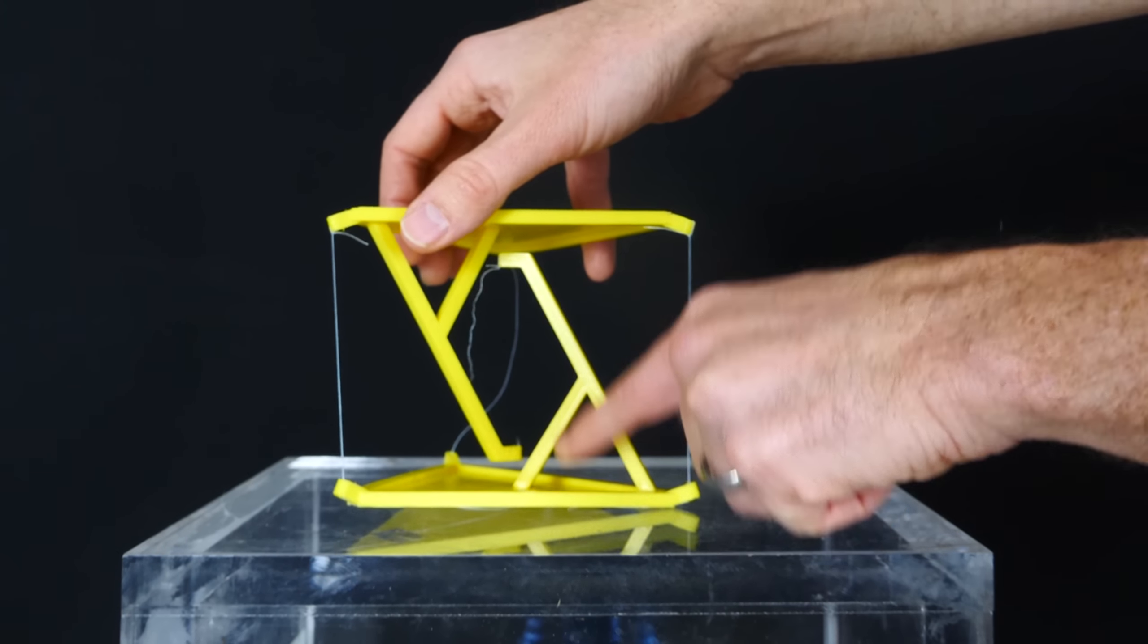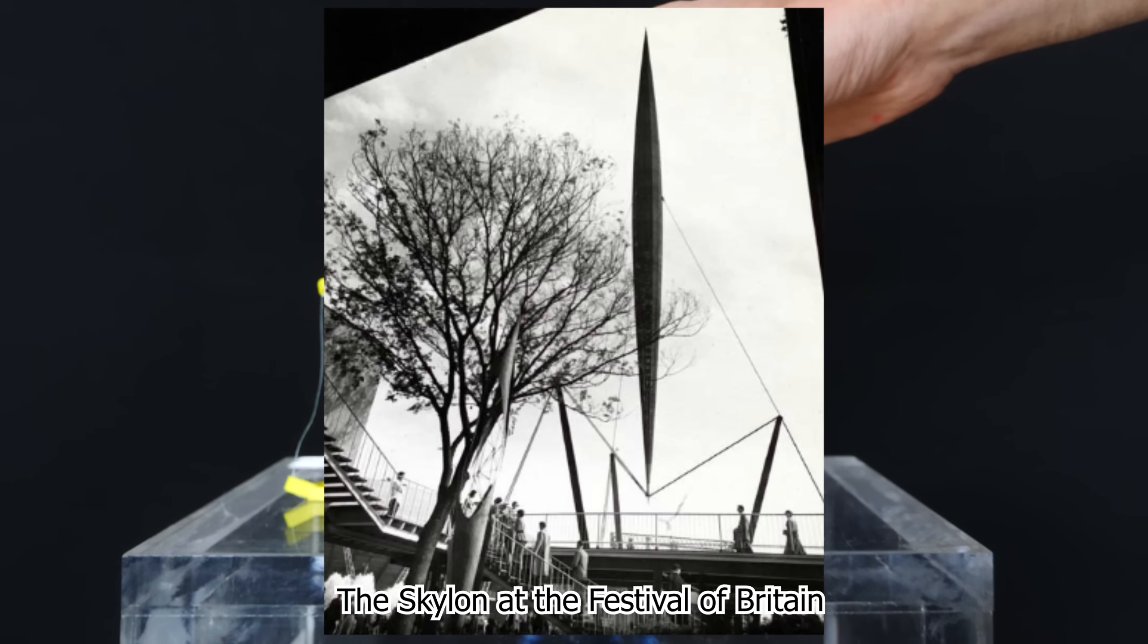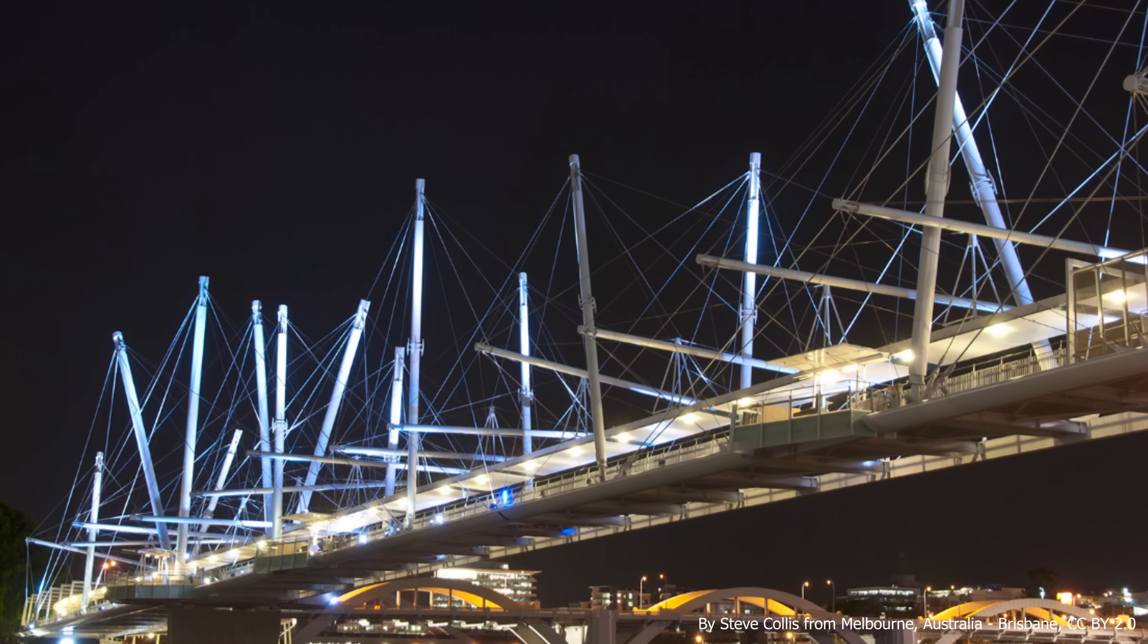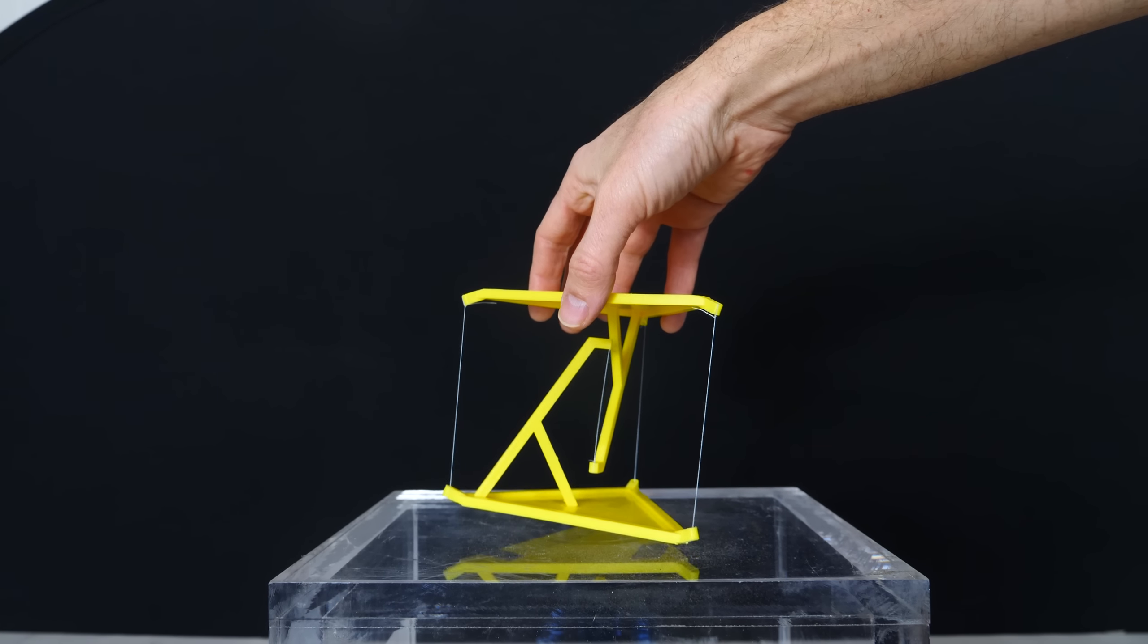Tensegrity structures are really interesting because they give the illusion of floating. You can actually make real structures based on these principles. For example, the largest tensegrity bridge was opened in October 2009 in Brisbane, Australia. It's called the Kirilpa Bridge.